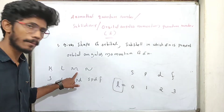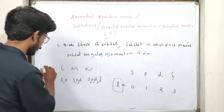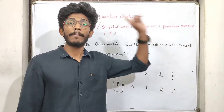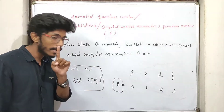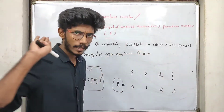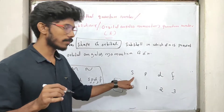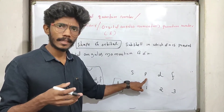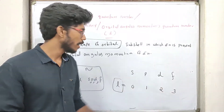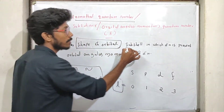Then we have the Azimuthal Quantum Number. It gives the shape of the orbital. The shape of s is a sphere, the shape of p is dumbbell-shaped, the shape of d is double dumbbell, and f is a complex 3D arrangement. This describes the shape of the orbitals.